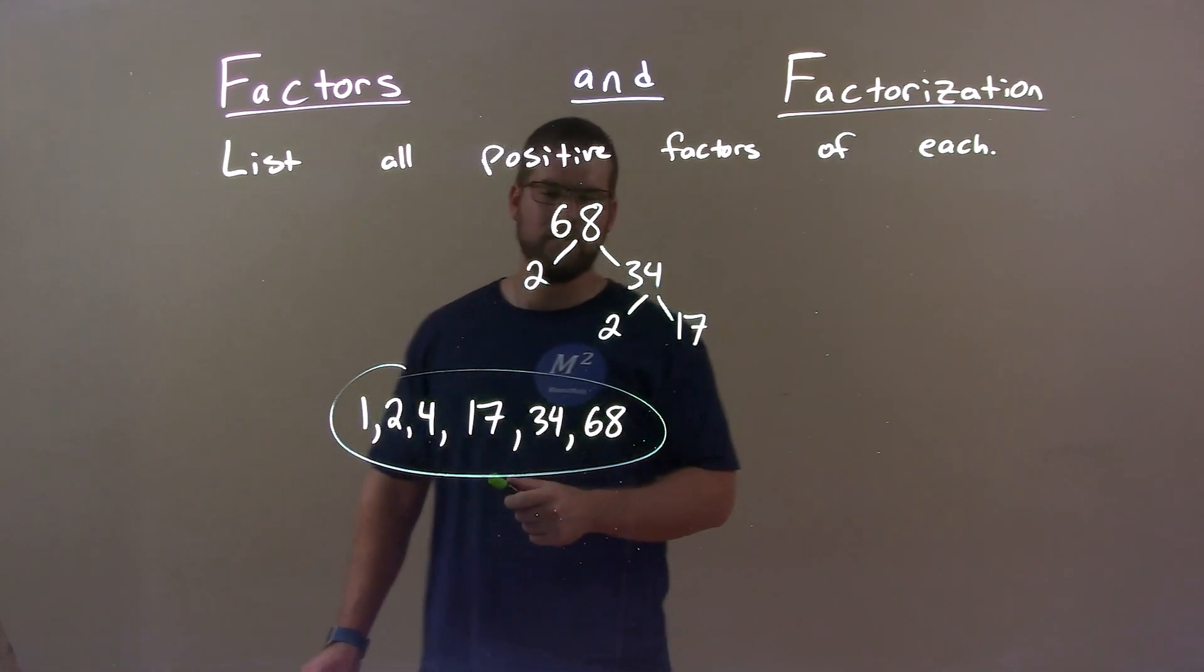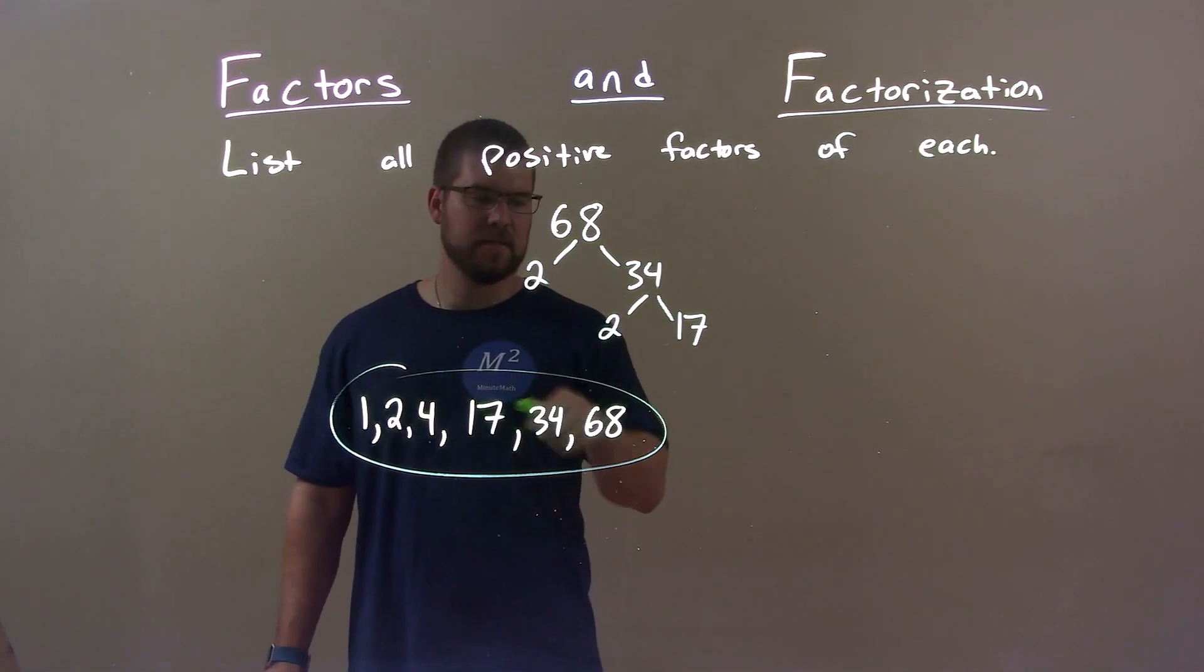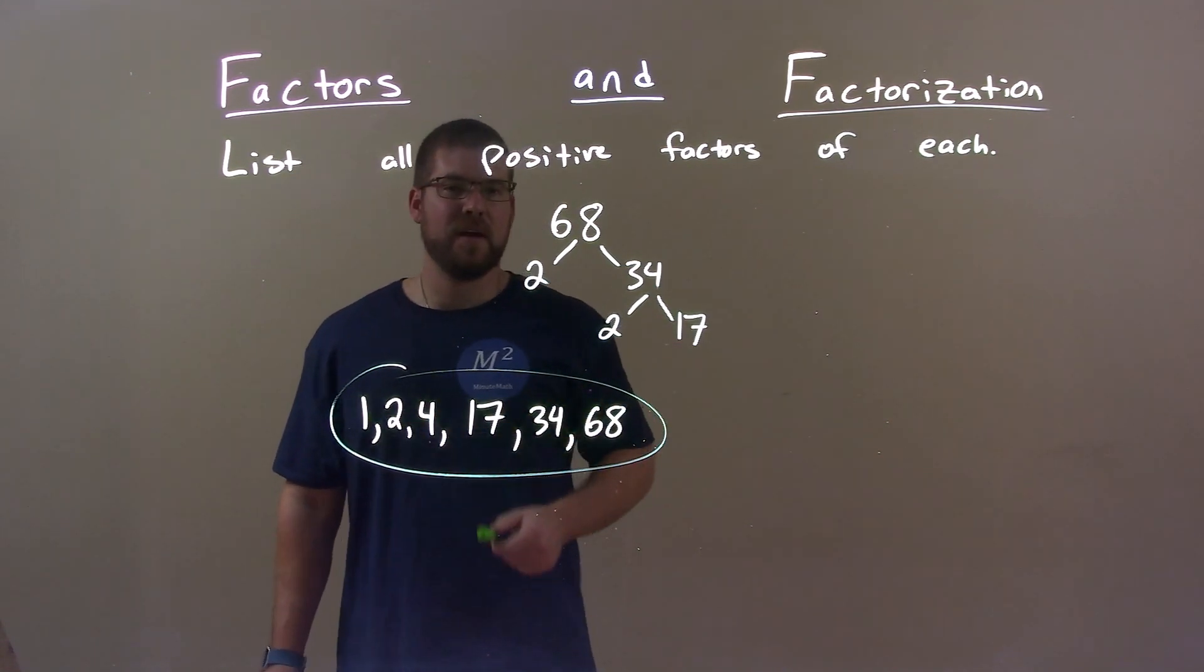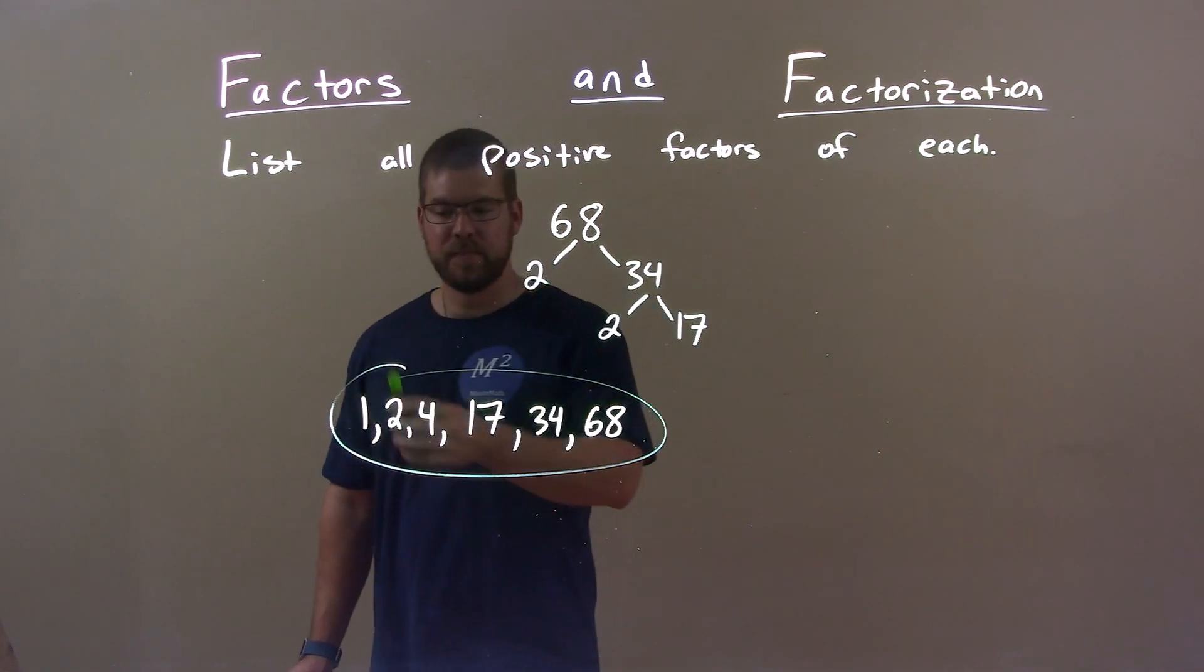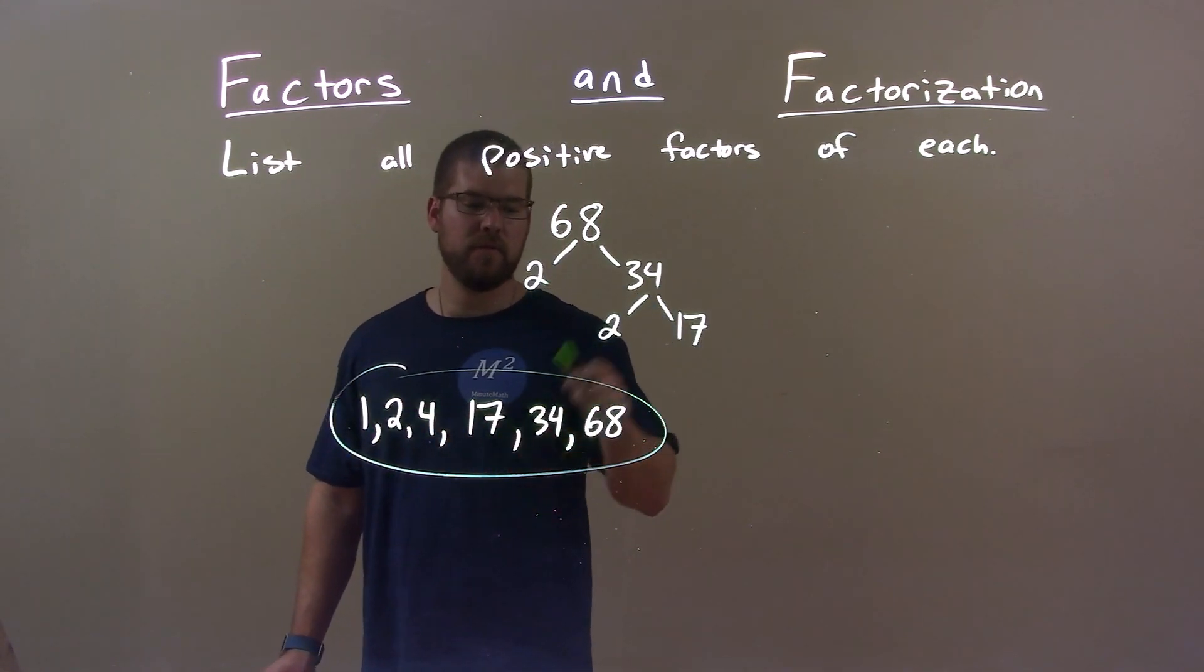2 was already written, right? 2 there. Got 4, then 17, then 34, and that was it. We already had 1 and 68 down. So again, final answer: 1, 2, 4, 17, 34, and 68.